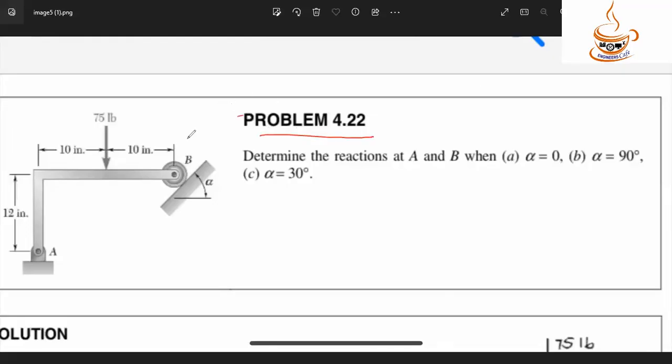This is Problem 4.22. The structure has a pin support at A and a roller support at B. The roller support has only one reaction perpendicular to the surface. For different conditions: when alpha equals zero, the surface is horizontal and the reaction is vertical. When alpha equals 90 degrees, the surface is vertical and the reaction is horizontal. When alpha equals 30 degrees, the reaction is at an angle.